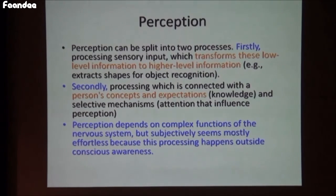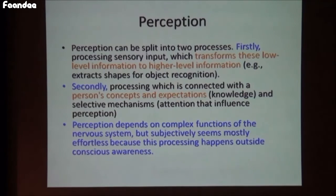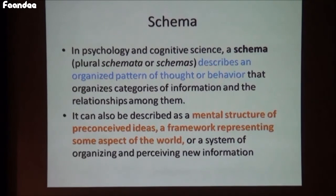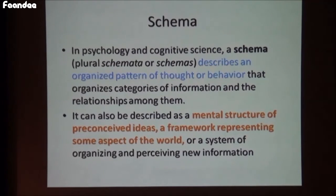Before even we start thinking, immediately we got this idea that this is a dog — it came to us so naturally when I showed those images of dog to you. So it is very automatic. A certain schema is created out of whatever we are seeing in the world. Schema is something like an organized pattern of thought or behavior, which we can also describe as a mental structure of preconceived ideas, a framework representing some aspects of the world.